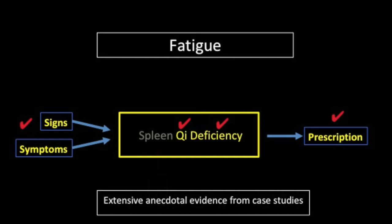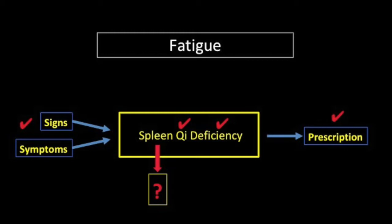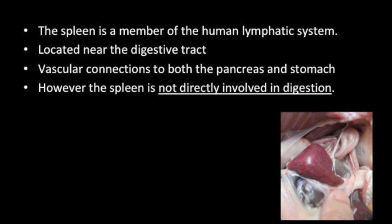The problem with calling this syndrome 'spleen qi deficiency' is that the spleen is not involved in the transformation of food into energy. As shown in part two, the spleen is part of the body's lymphatic system that happens to be located near the digestive tract. It has vascular connections to both the pancreas and the stomach. However, the spleen is not directly involved in digestion.